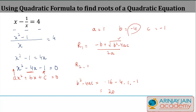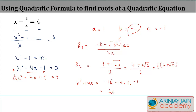So the roots we get: root one is minus b which is 4, plus square root of 20, divided by 2a which is 2. To simplify, root 20 can be written as root 4 times root 5, or 2 root 5. So we have 4 plus 2 root 5 divided by 2. Taking 2 common gives 2 plus root 5 divided by 2, and the 2 cancels, giving 2 plus root 5 as one of the roots.